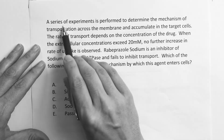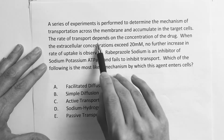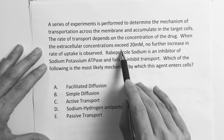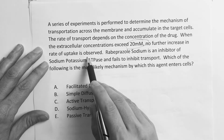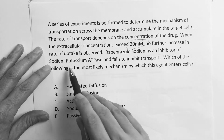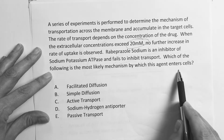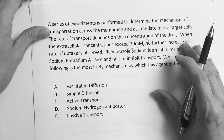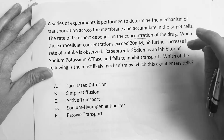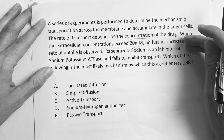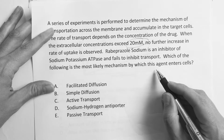The next question: a series of experiments is performed to determine the mechanism of transportation across the membrane and accumulation in target cells. The rate of transport depends on the concentration of the drug. When the extracellular concentration exceeds 20 nanomoles, no further increase in the rate of uptake is observed. Rebaprazole sodium is an inhibitor of the sodium-potassium ATPase and fails to inhibit transport. Which of the following is the most likely mechanism by which this agent enters the cell?